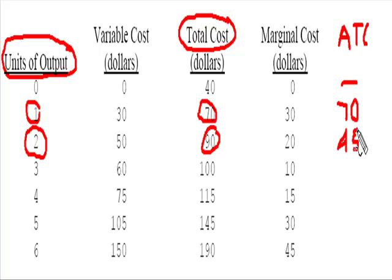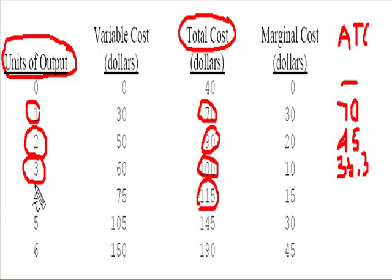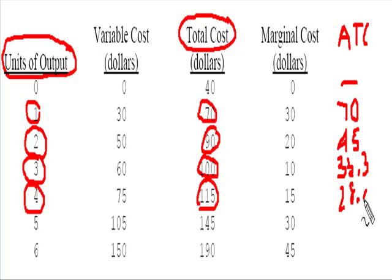So far, average total costs are still declining. Then 100 divided by 3 gets us 33.3. And then 115 divided by 4 — half of that would be 57.5, and then another half would be about 28.8. So we'll go ahead and write 28.8.